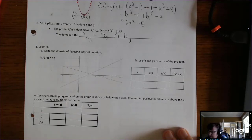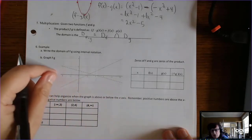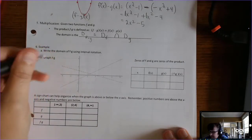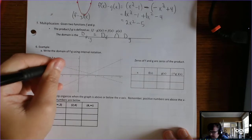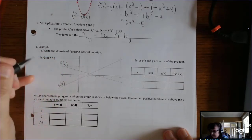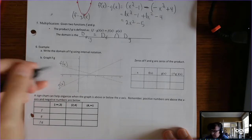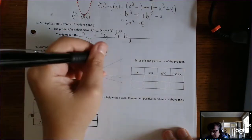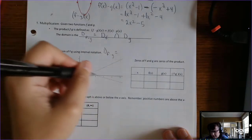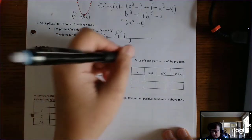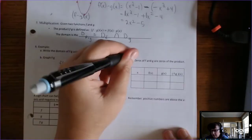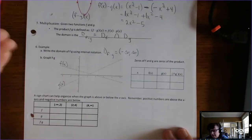There's a little bit more going on when you have multiplication. Let's let the dashed line be f of x and the solid line be g of x. The first thing we want to do is write the domain. This has domain all real numbers, and that has domain all real numbers — there are no restrictions on the x coordinates. So the domain of f times g is negative infinity to infinity.